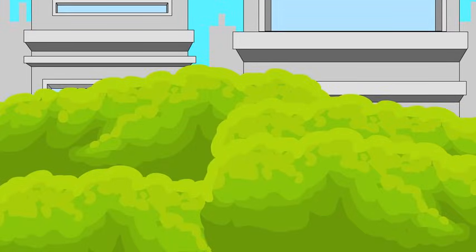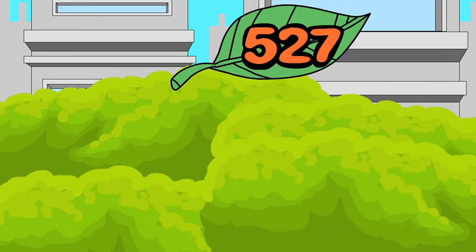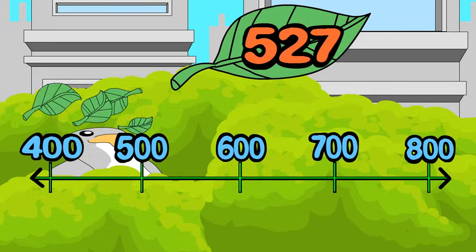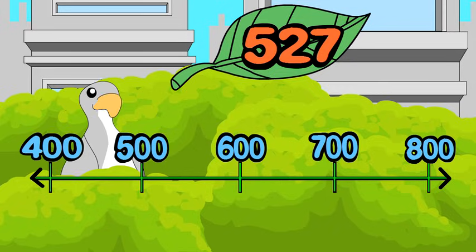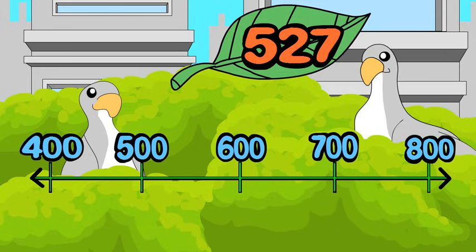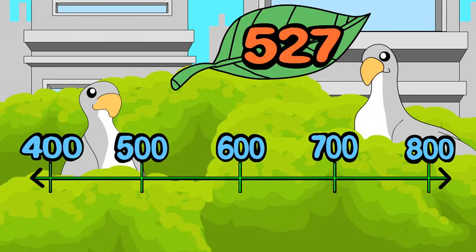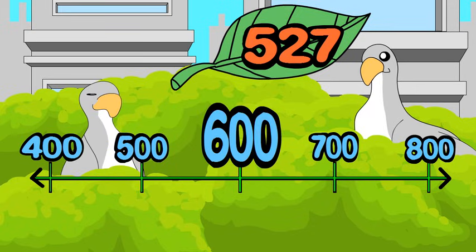You can round any number to the nearest hundred in four easy steps. Let's see how — let's round five hundred twenty-seven to the nearest hundred. Step one: figure out what benchmarks to use. To the nearest hundred, choose the hundred before five hundred twenty-seven and the hundred after. Five hundred is the lower benchmark and six hundred is the higher benchmark.